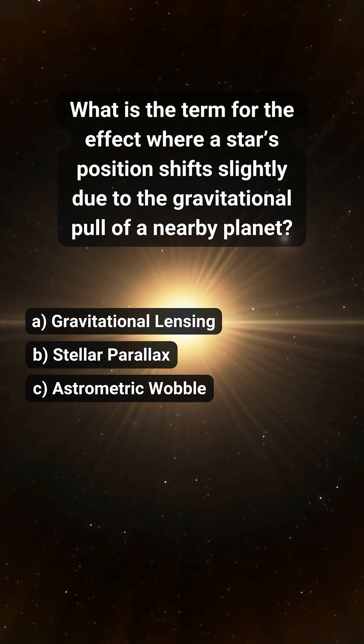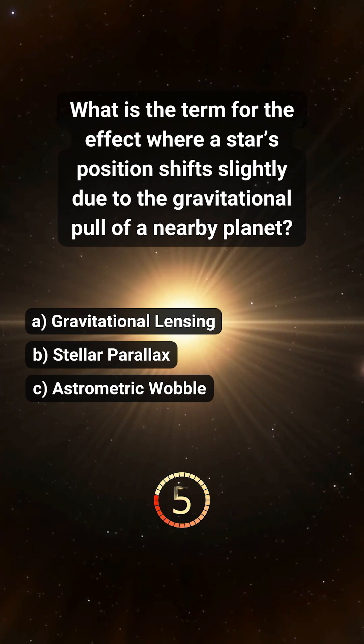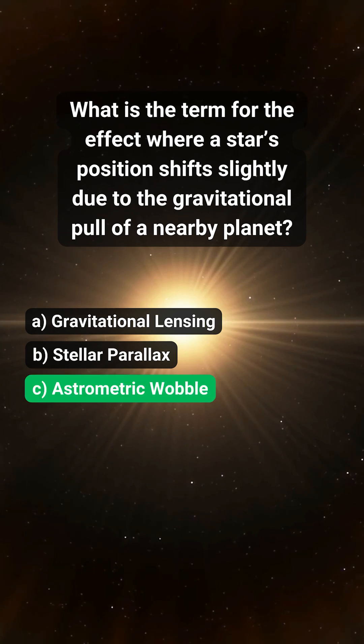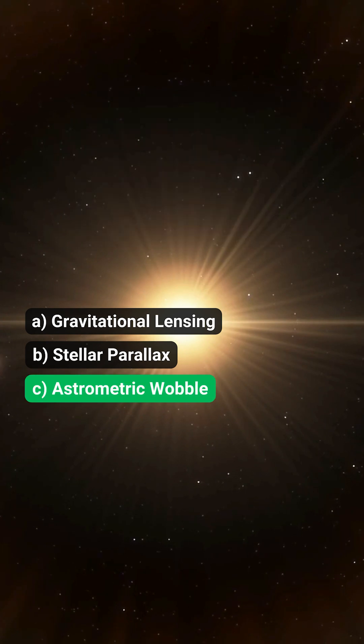What is the term for the effect where a star's position shifts slightly due to the gravitational pull of a nearby planet? C. Astrometric wobble.